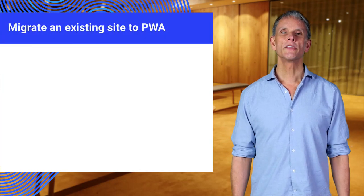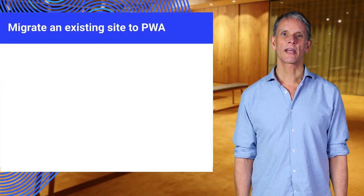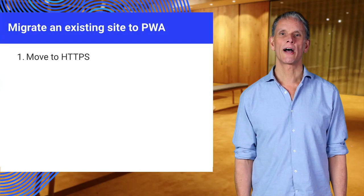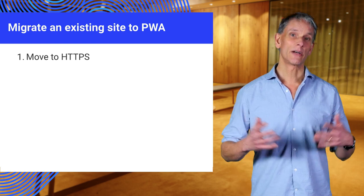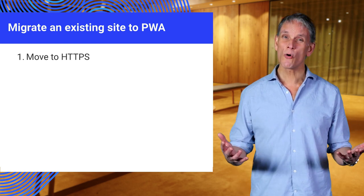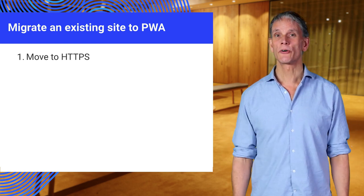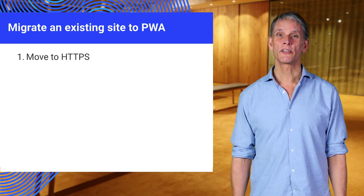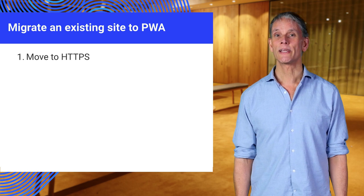Building a PWA does not mean starting from scratch. You can implement the steps progressively. First, you need to secure your connection. Service workers require HTTPS to keep malicious scripts out. However, given the importance of security and privacy, you should be using HTTPS anyway.